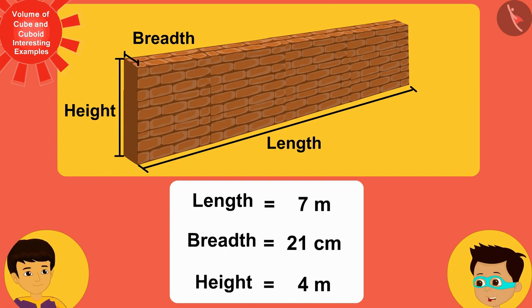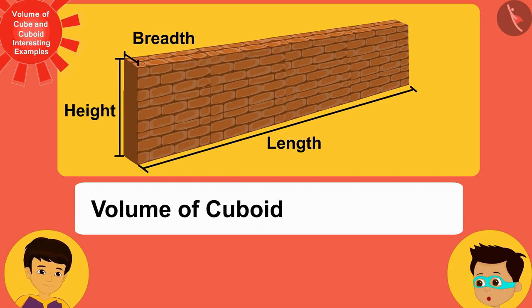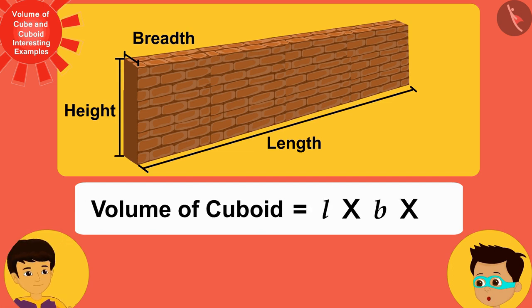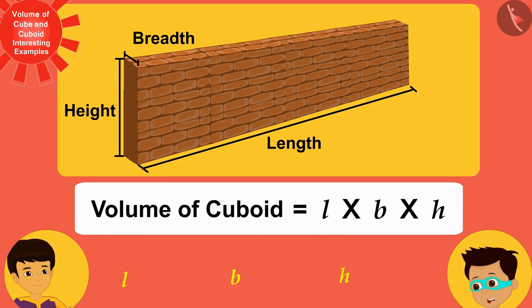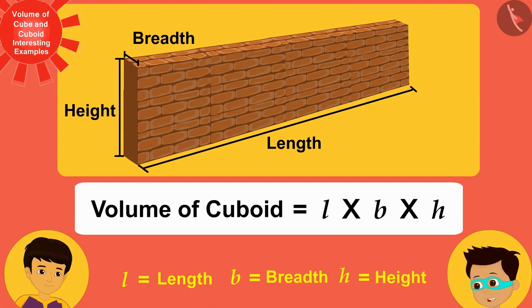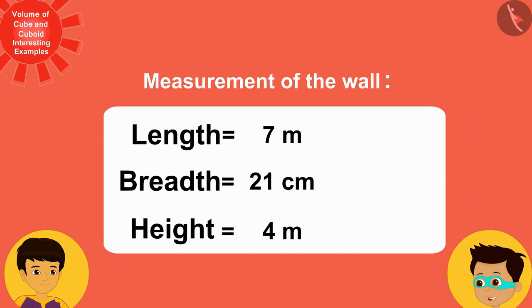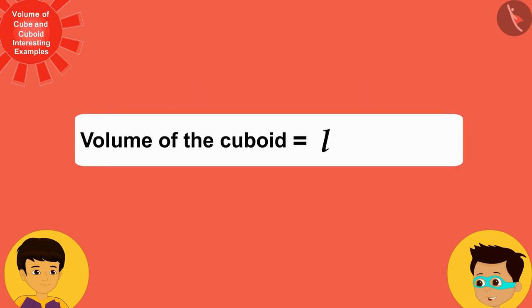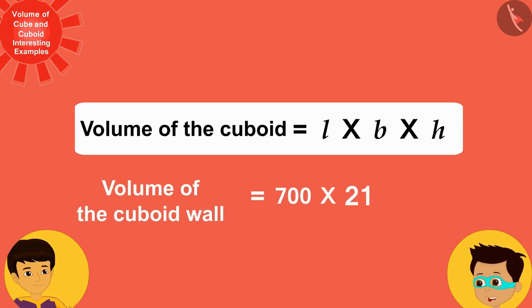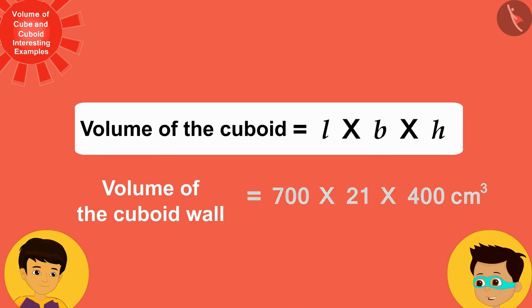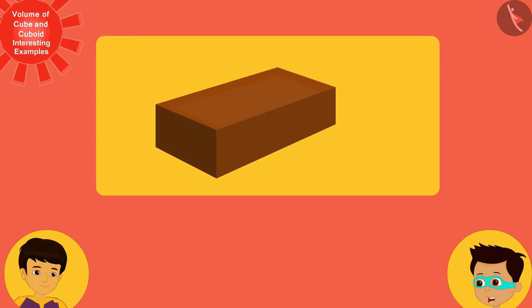We know that the volume of a cuboid is the product of L, B, and H, where L, B, and H are its length, breadth, and height respectively. First, we will write all these measurements in the same units. Now we can write the length, breadth, and height of this wall in the formula instead of L, B, and H respectively.